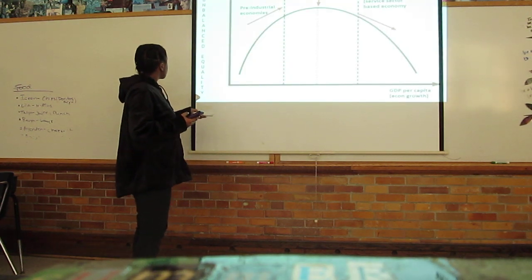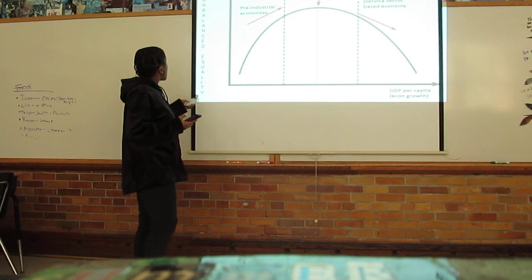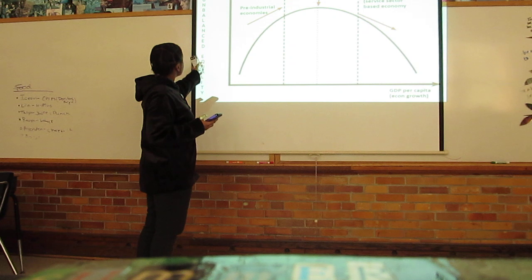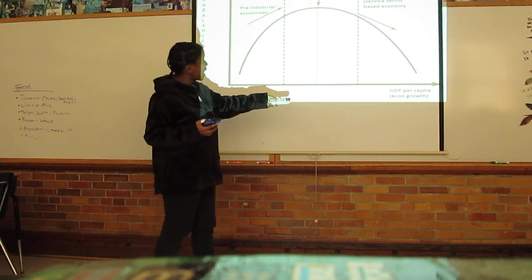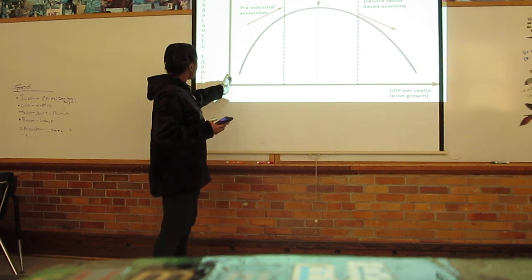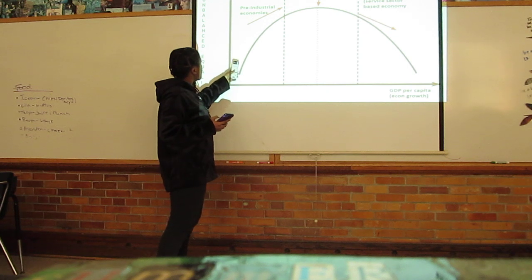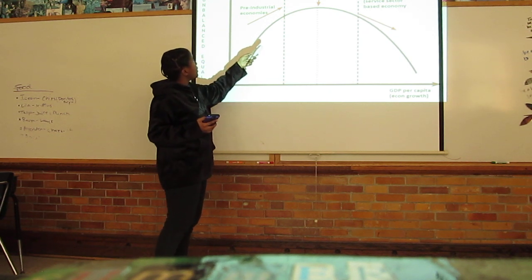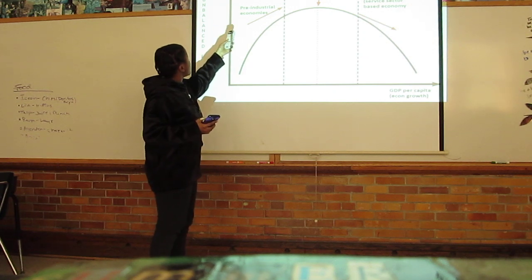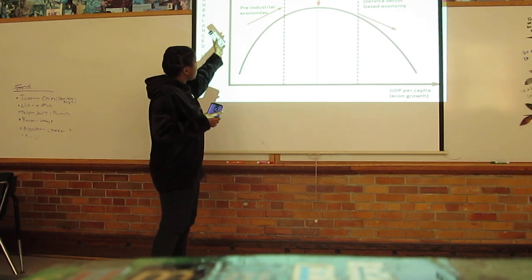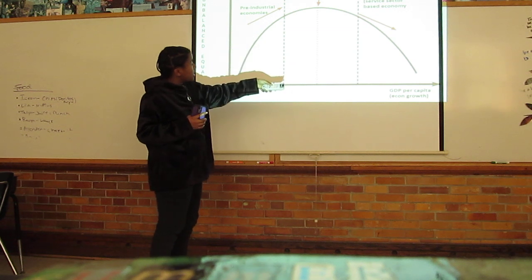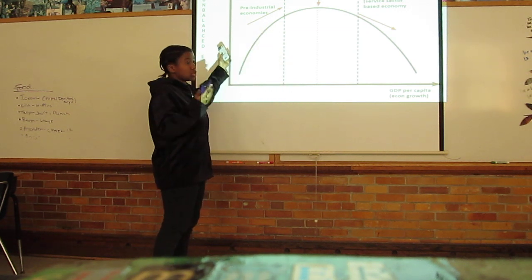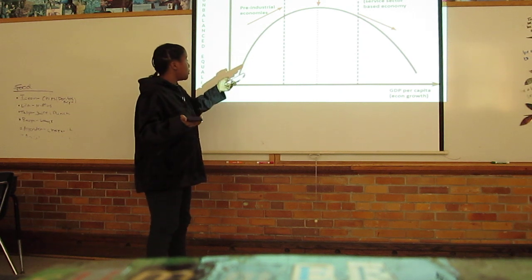In the graph, the vertical axis represents environmental damage and the horizontal axis represents economic growth. This line shows that as the economy grows, we start making more money and using more resources until we reach a turning point where we use the most resources without thinking about the effects. As the economy goes down, we use fewer resources because we've used them all up, but we still need more money.